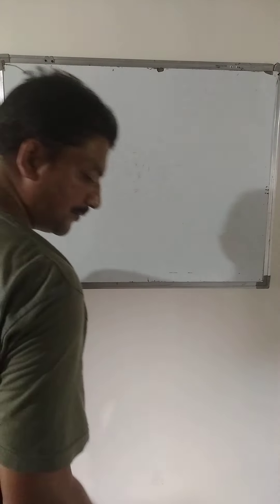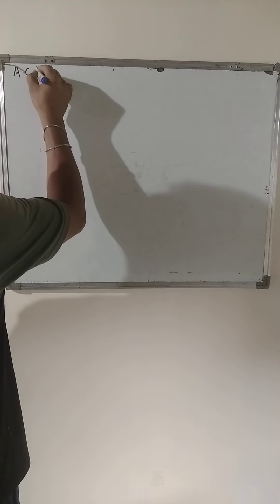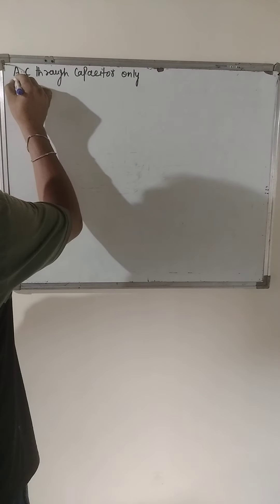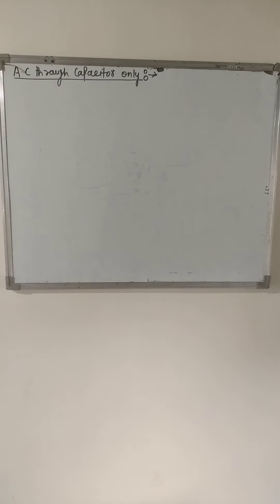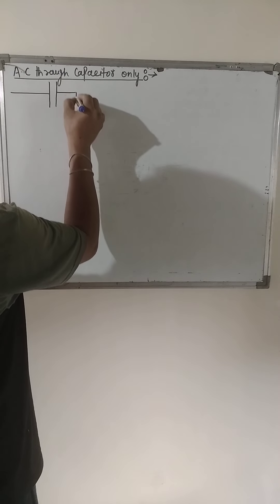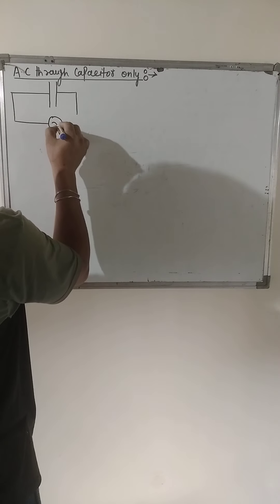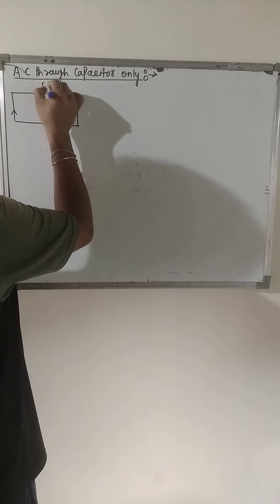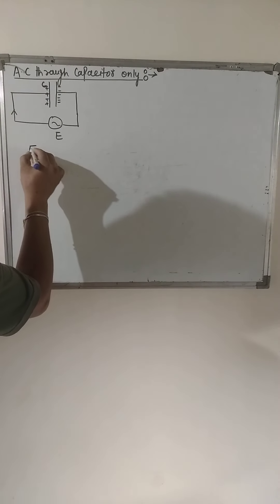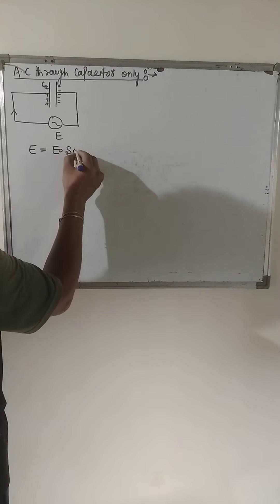First topic: AC through capacitor only. A capacitor is a device to store electrical energy. It has two parallel plates — one plate is positively charged and the second plate is negatively charged. We connect it to an AC source with symbol E. The question starts from EMF: E = E₀ sin ωt.